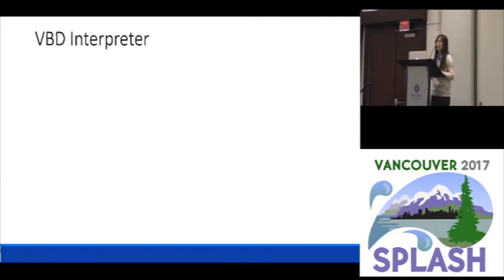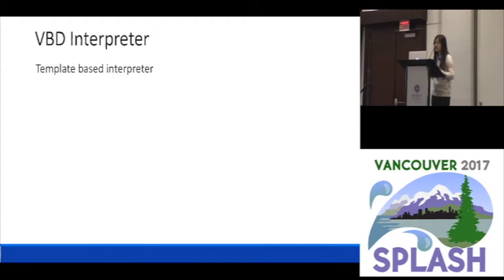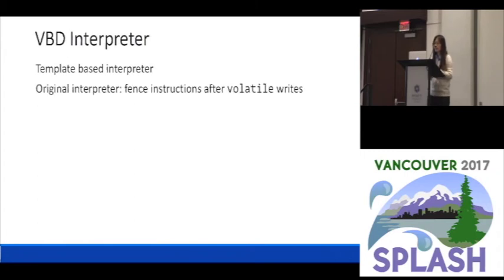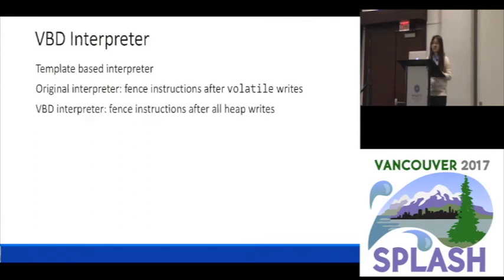To make the whole JVM volatile by default, we must make sure the interpreter is volatile by default, and the compiler is also volatile by default. Looking at the interpreter first: the interpreter in HotSpot JVM is a template-based interpreter, which means the JVM will generate template code for each bytecode during JVM startup time. In the original JVM, volatile semantics are preserved by inserting fence instructions after every volatile write. So in our implementation, all we have to do is make sure there are fence instructions after all heap writes.